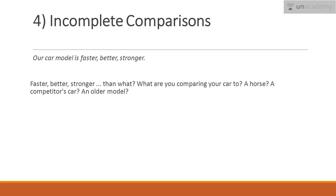The fourth error is incomplete comparisons. Can you see what's wrong in this sentence: 'Our car model is faster, better, stronger'? Faster, better, stronger — than what? Are you trying to compare your car to a horse, a competitor's car, or an older model? When you assert that something should be compared to something else, always clarify what that something else is. Otherwise it becomes very difficult for your readers to understand what the comparison actually means.